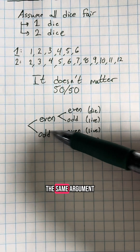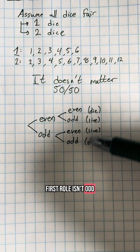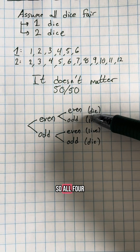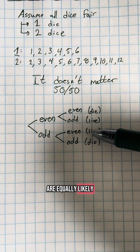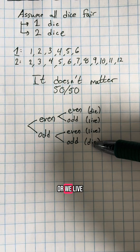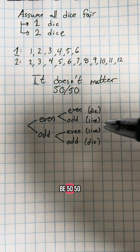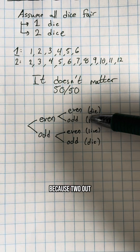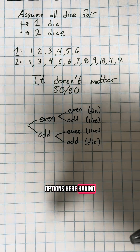We can apply the same argument if our first roll is odd. So all four of these options are equally likely — whether we die or we live, it doesn't matter, it's going to be 50/50, because two out of the four options have us living.